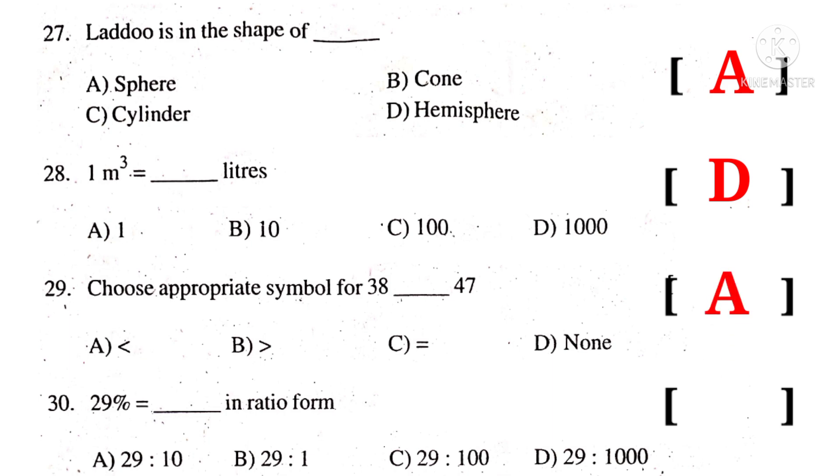30. 29 percent is equal to dash in ratio form. Percent indicates 100. So 29 is to 100. So the correct choice is C.